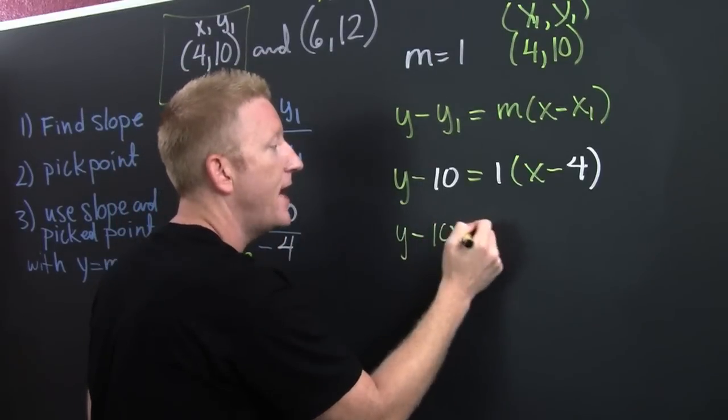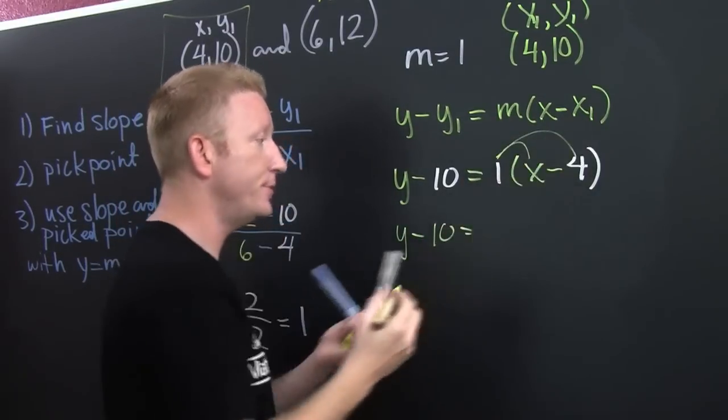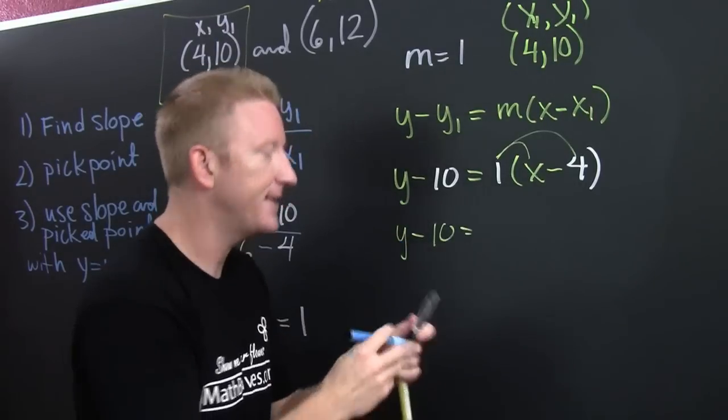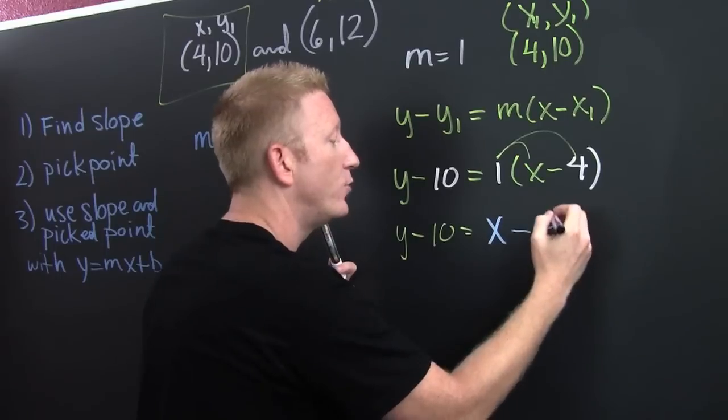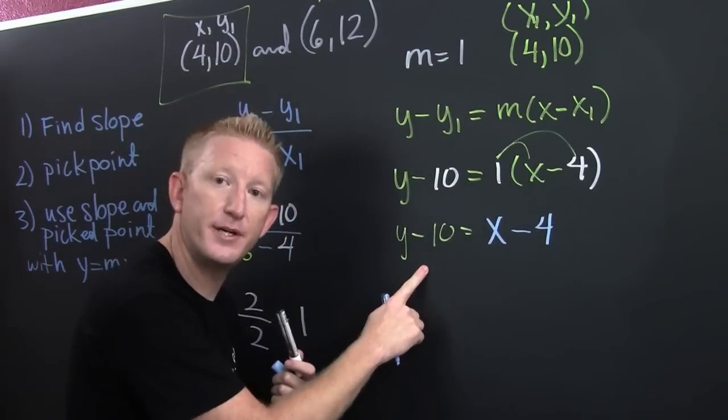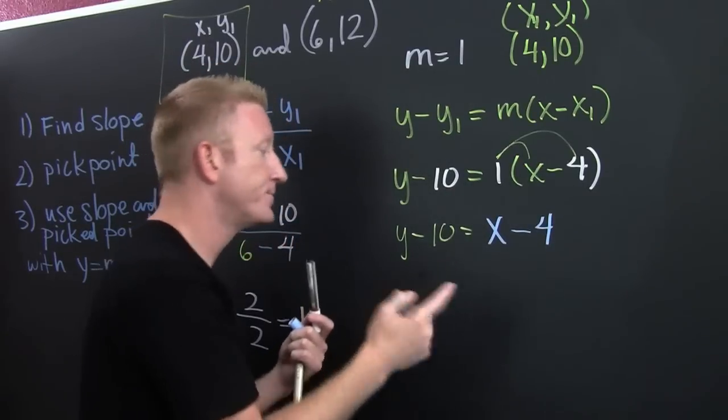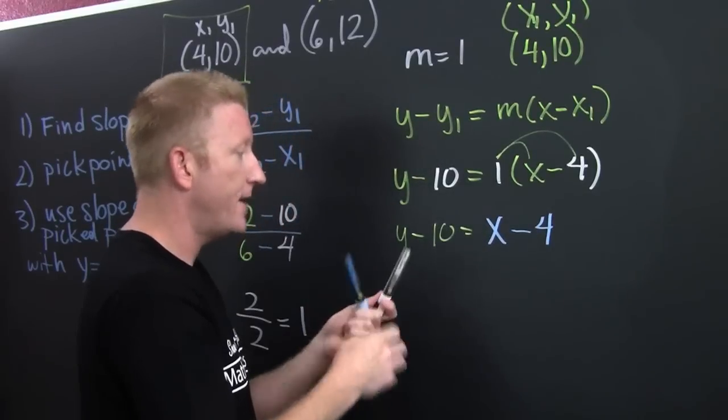So then I'm going to have y minus 10, and that 1 doesn't change a dang thing. That's the identity property. X minus 4. Now let's put it in y equals mx plus b.